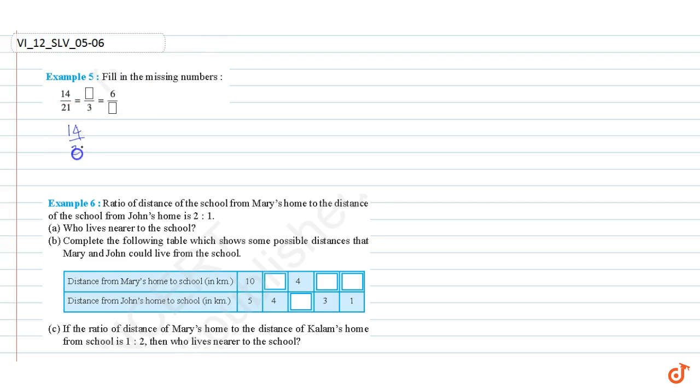14 by 21 is equal to 2 into 7 divided by 3 into 7. Cancelling 7 and 7 we get this is equal to 2 by 3. So here it is 2. Multiplying 2 by 3 by 1 that is 3 by 3 we get which is equal to 6 by 9. So this ratio is 6 by 9. So here it is 9. This is our answer.